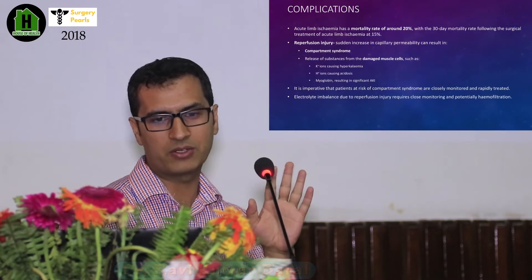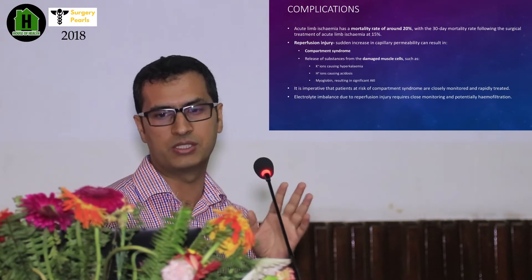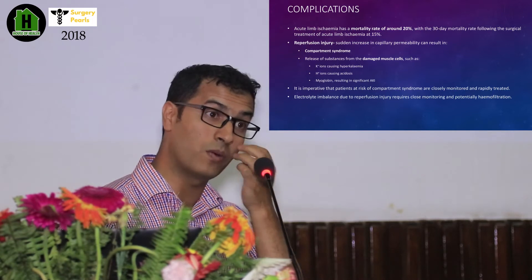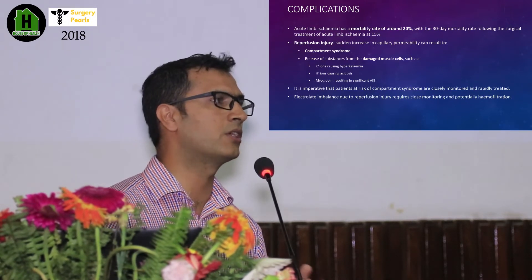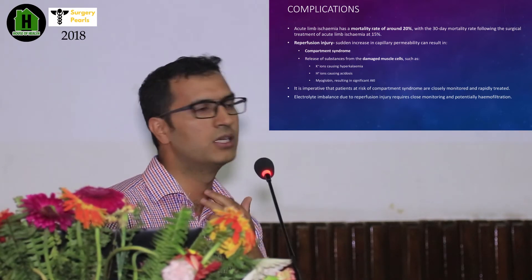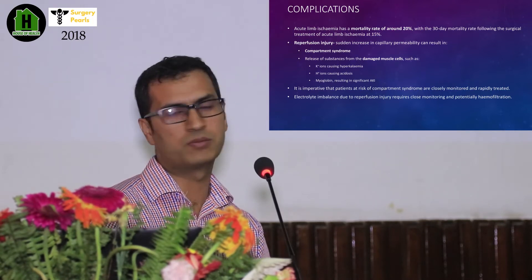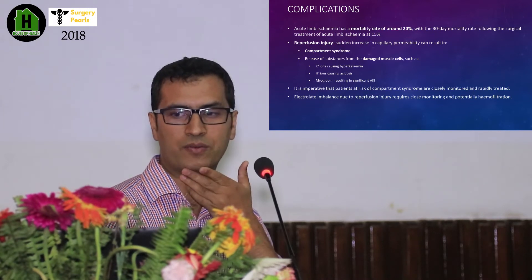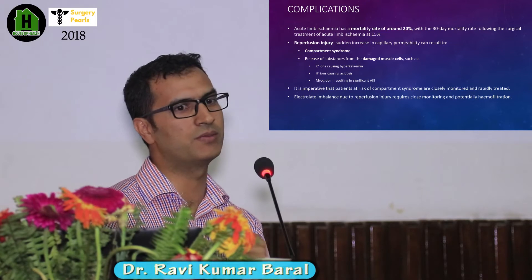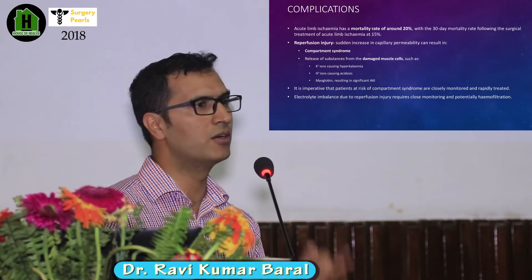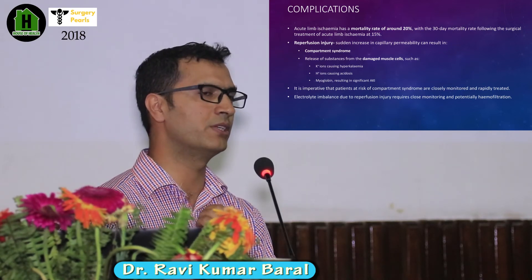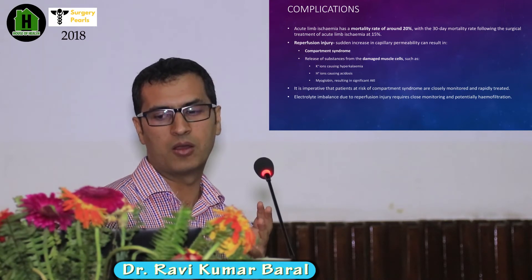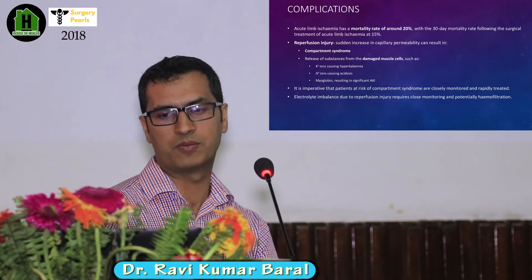Reperfusion injury is the sudden increase in capillary permeability after reperfusion of an ischemic limb, with release of potassium ions, hydrogen ions, myoglobin, and other toxins that can cause acute kidney injury and may be fatal. Treatment includes hemofiltration and dialysis, bicarbonate supplementation, and adequate hydration. Dialysis should be initiated early when a prolonged ischemic period is suspected, to manage the adverse effects of reperfusion injury.